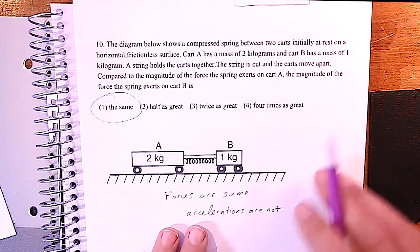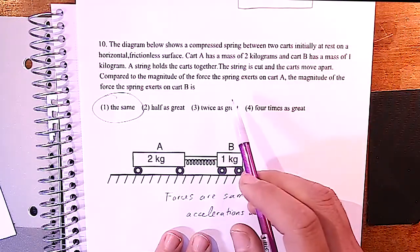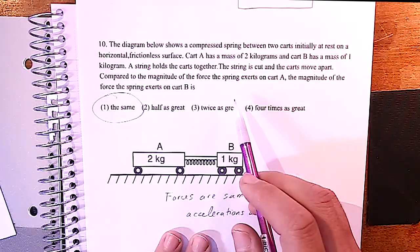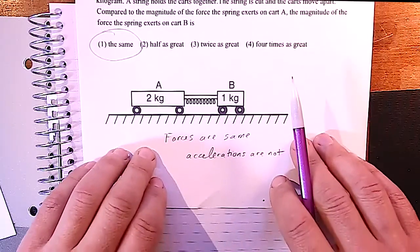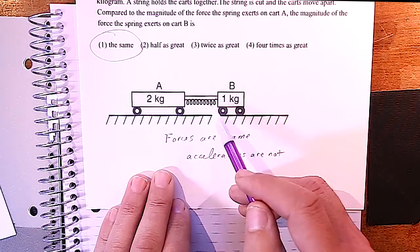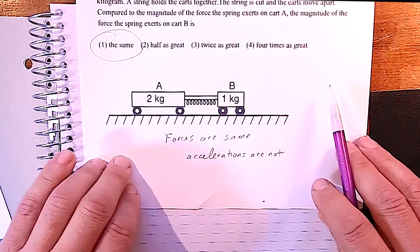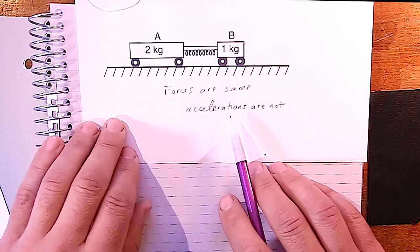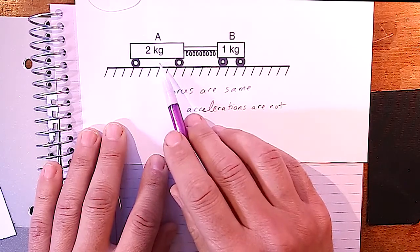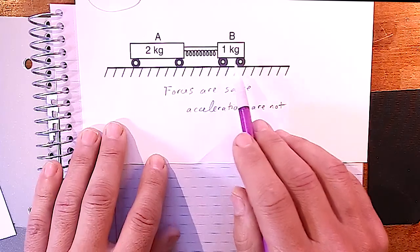Finally, we have two carts connected by a spring. This looks like a conservation of momentum problem, but all it's asking for is the force. The spring pushes on the two-kilogram block, and the equal and opposite force is the spring pushing on the one-kilogram block — so those forces must be the same. The accelerations are not the same: the greater mass has the lower acceleration, and the one-kilogram mass has the greater acceleration.